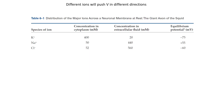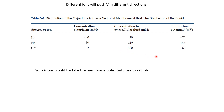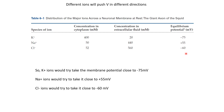Now we have all the important elements for understanding the membrane potential. Potassium ions, whose equilibrium potential is minus 75 mV, will try to take the membrane potential toward minus 75 mV. Sodium ions will try to push the membrane potential toward plus 55 mV. Chloride ions will try to push it toward minus 60 mV. But the membrane potential is just one value — it cannot be these three different values simultaneously. Even though three different factors are trying to achieve different values, the membrane potential will settle somewhere in between. Exactly what that value will be is what we will try to understand in the next video.